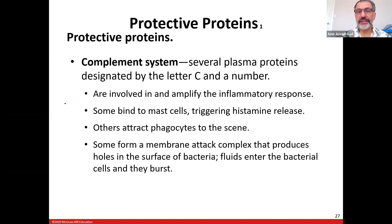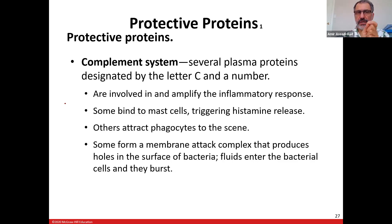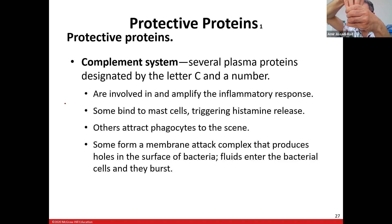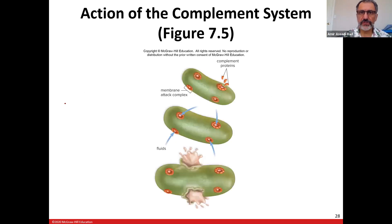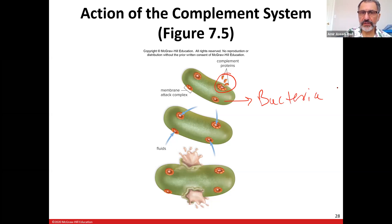Protective immunity: the complement system. It is part of innate immunity. When a person is introduced to bacteria, your body makes protein molecules called the complement system. These protein molecules sit on top of the bacteria and poke a hole. That hole allows fluid from outside to enter the bacteria, which then dies. Your body makes these complement protein molecules as needed.